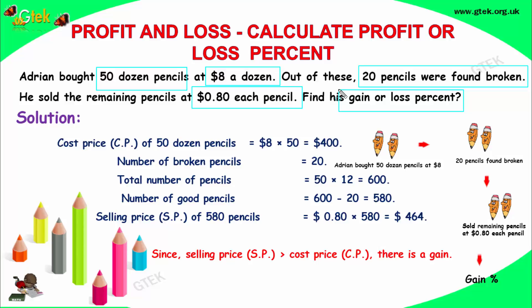So, 50 dozen pencils — each dozen has 12 pencils — bought at 8 dollars per dozen. Among those, 20 pencils are broken. He sold the remaining pencils at 0.8 dollars each. Whether he got a loss or a gain?